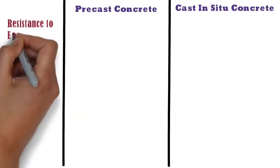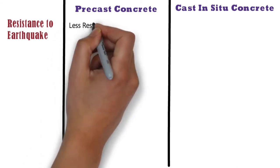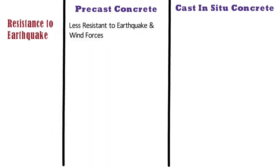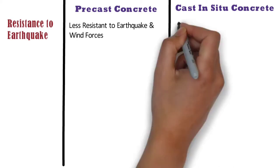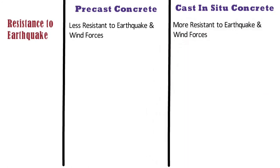Precast concrete members are less resistant to earthquake and wind forces, hence they are not recommended where seismic loads are dominant. Whereas cast in situ concrete members are more resistant to earthquake and wind forces.